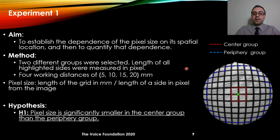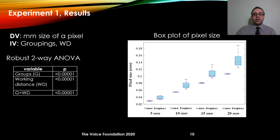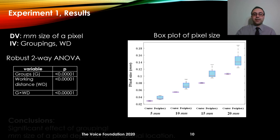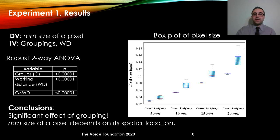We ran the experiment for four different working distances of 5, 10, 15, and 20 millimeters, and computed the pixel size as the length of a grid line in millimeters divided by the number of pixels in that line. The hypothesis was that pixel size is significantly smaller in the center group than in the periphery group. To test this, we ran a two-way ANOVA with millimeter size of a pixel as the dependent variable and grouping and working distance as independent variables. Results showed significant main effects of grouping and working distance, as well as a significant interaction effect, confirming that millimeter size of a pixel depends on its spatial location.